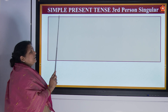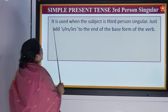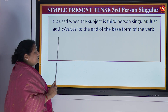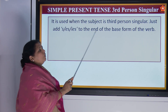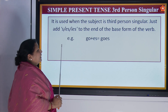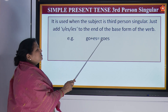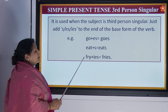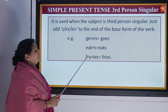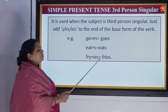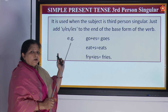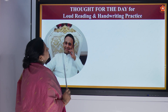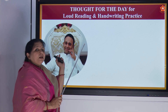Now we will look at simple present tense, third person singular. It is used when the subject is third person singular — just add 's', 'es', or 'ies' to the end of the base form of the verb. Examples: go → goes (G-O-E-S); eat → eats. Fry (F-R-Y) → fries, where 'y' is replaced by 'ies'. For why 'y' is taken out and 'ies' is added, go back and watch our earlier classes for the proper rules.